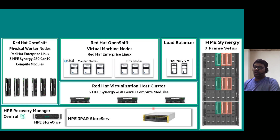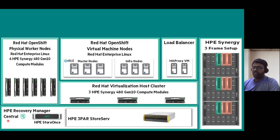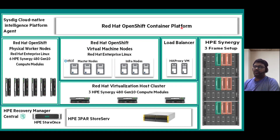For data protection within this architecture: data archival goes to HPE StoreOnce, main data stays on HPE 3PAR storage, and a backup tool — HPE Recovery Manager Central — is used. You can also use third-party solutions like CommVault, Cohesity, Rubrik, or others. For centralized management, the Red Hat OpenShift container platform portal is used, with the backend being the Sysdig cloud-native intelligence platform agent for accessing the entire architecture.